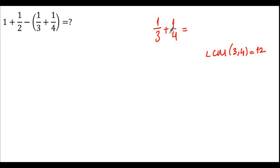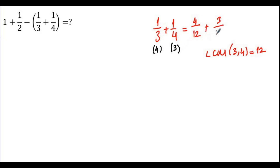I have to make the denominators 12. I multiply 3 by 4 to get 12, and 4 by 3 to get 12. So 4 times 1 is 4 over 12, plus 3 times 1 is 3 over 12. Now we have the same denominators, so we can add the numerators: 4 plus 3 over 12, which is 7 over 12. This expression equals 7 over 12.